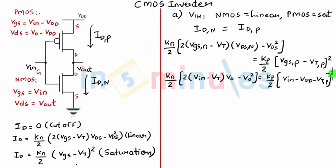Now we know that VIH is a point on the voltage transfer characteristics where the slope is equal to minus 1. It means that DVout by DVIN is equal to minus 1.